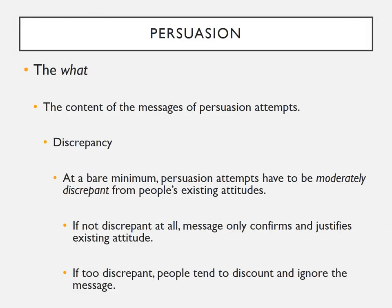Now let's discuss the 'what,' or the content of the message. What entities say during persuasive attempts definitely influences success. At a bare minimum, persuasion attempts have to be at least moderately discrepant — or different — from people's existing attitudes. If the message isn't discrepant from what people already believe, it will just confirm existing attitudes. For instance, a commercial telling me to buy the newest Nintendo console won't affect me much because I already love Nintendo. However, if the message is very discrepant from existing attitudes, people will tend to discount and ignore it.